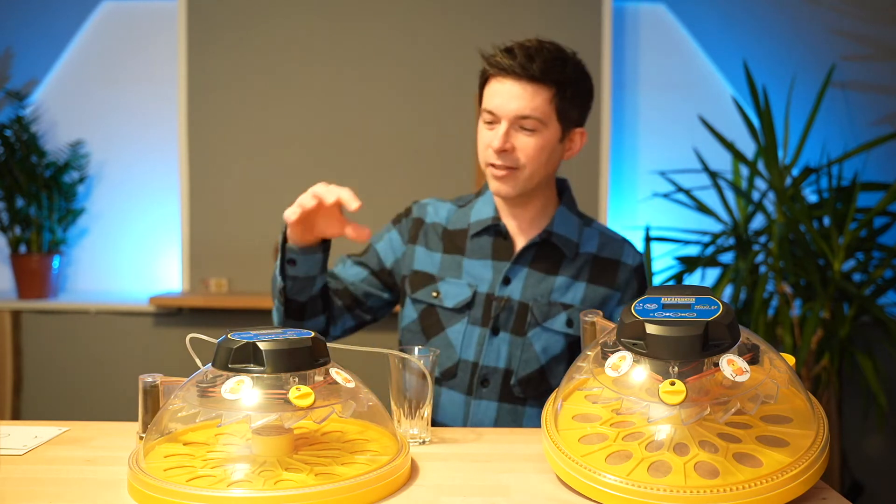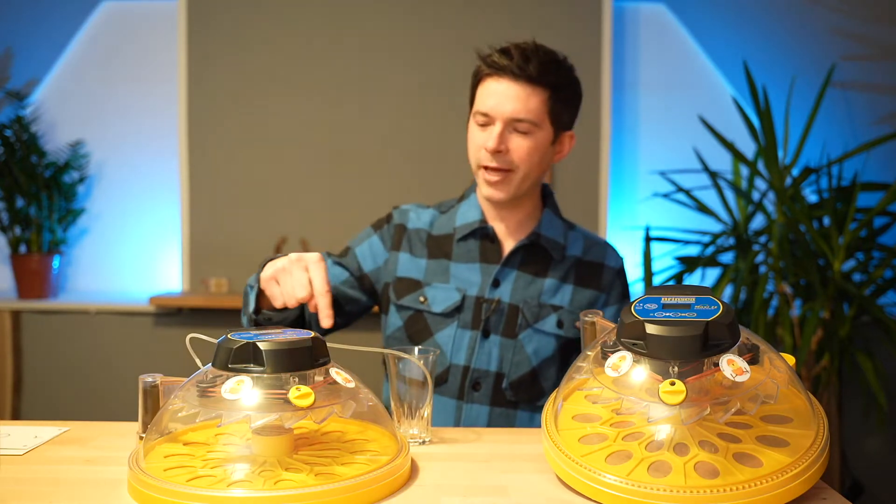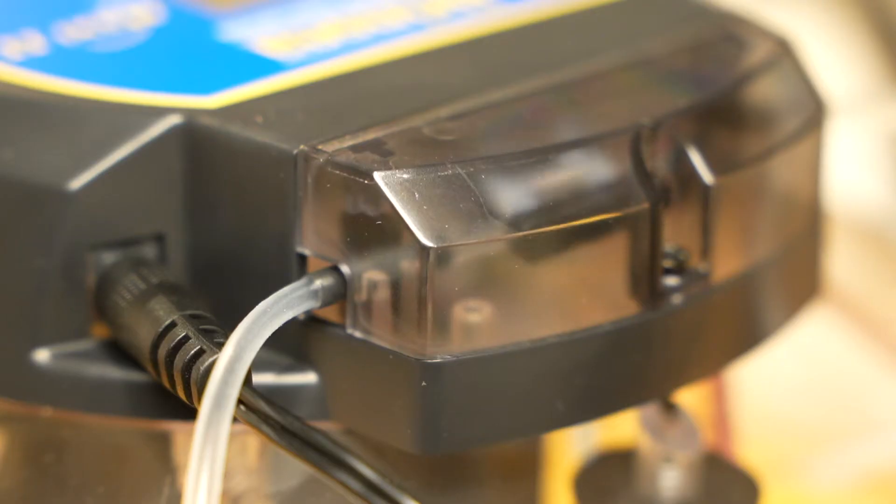There is a brother of this version called the Maxi 2 EX, and this one's got the automatic moisture regulation. And there's also another version called the Maxi 2 Echo, and this doesn't have an automatic egg turner.